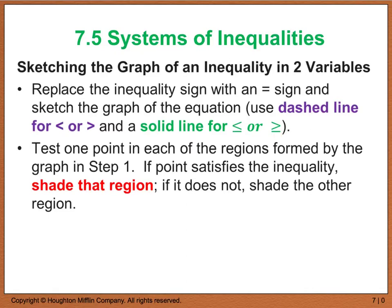Then we're going to pick a test point that falls within one of the regions. If we plug that test point into our inequality and it makes it true, we shade that region. If it makes the inequality false, we shade the opposite region.